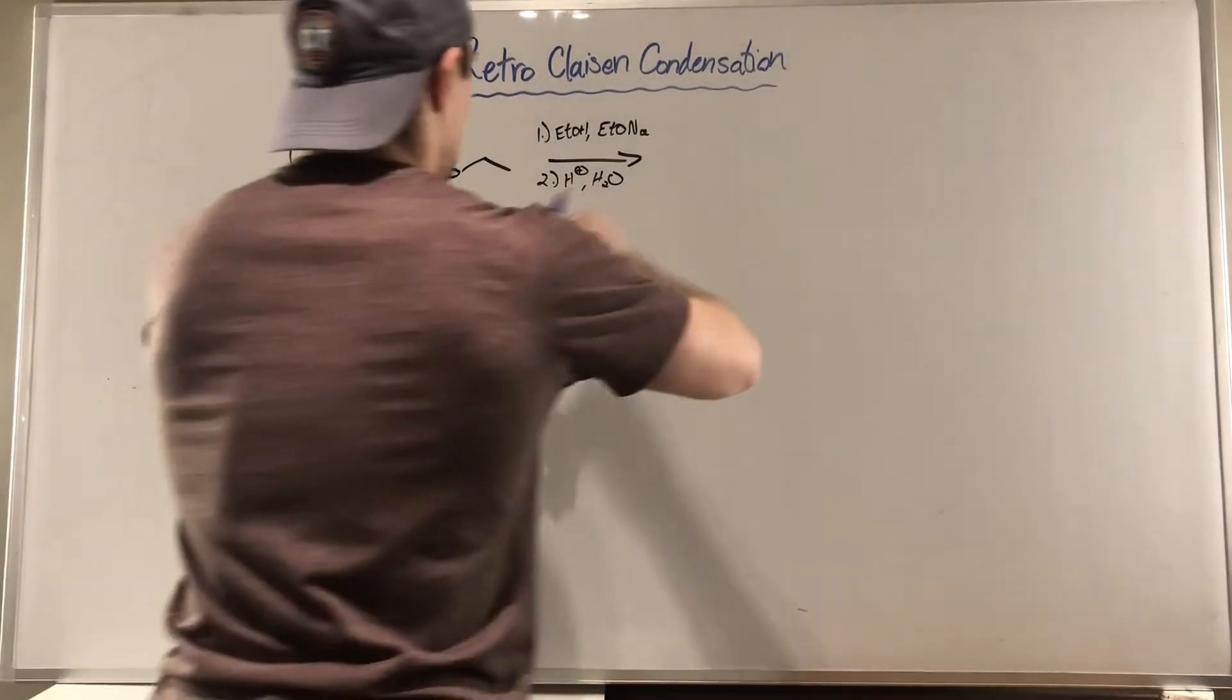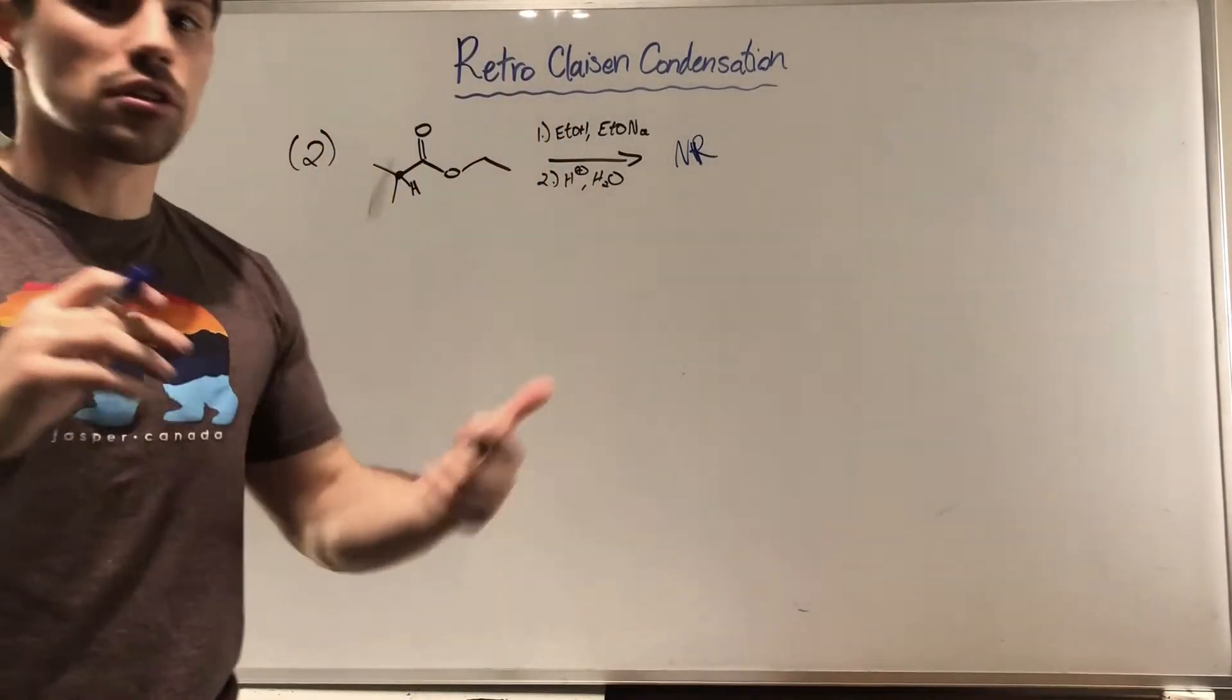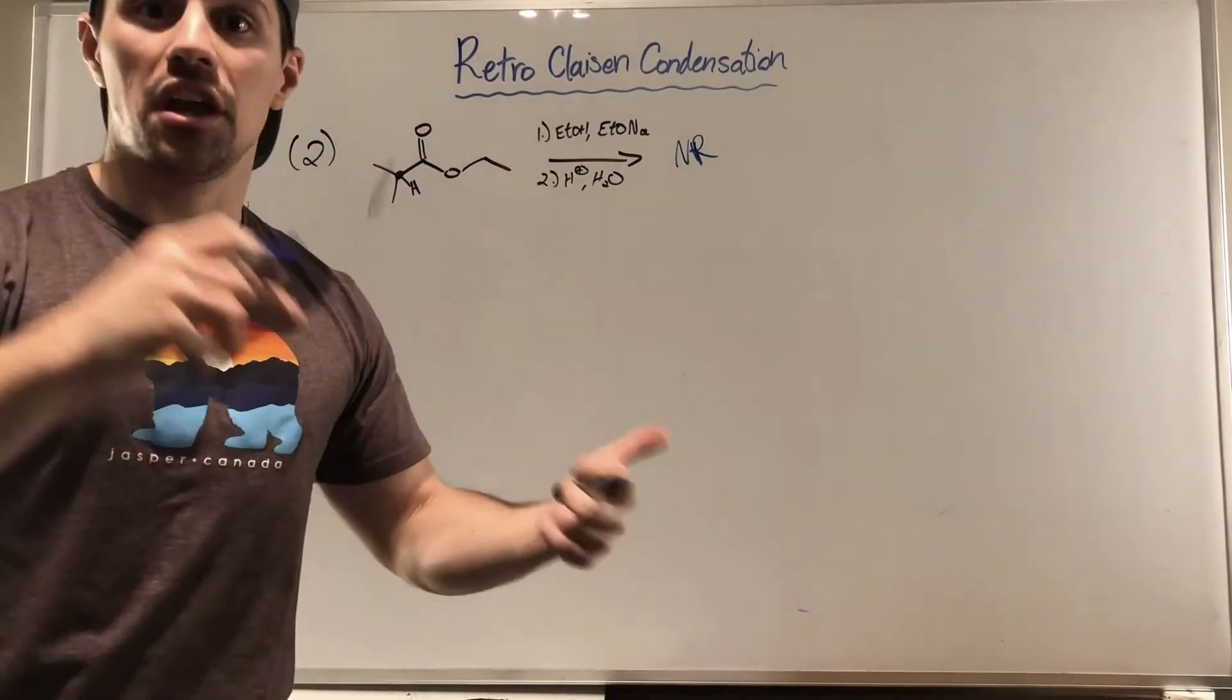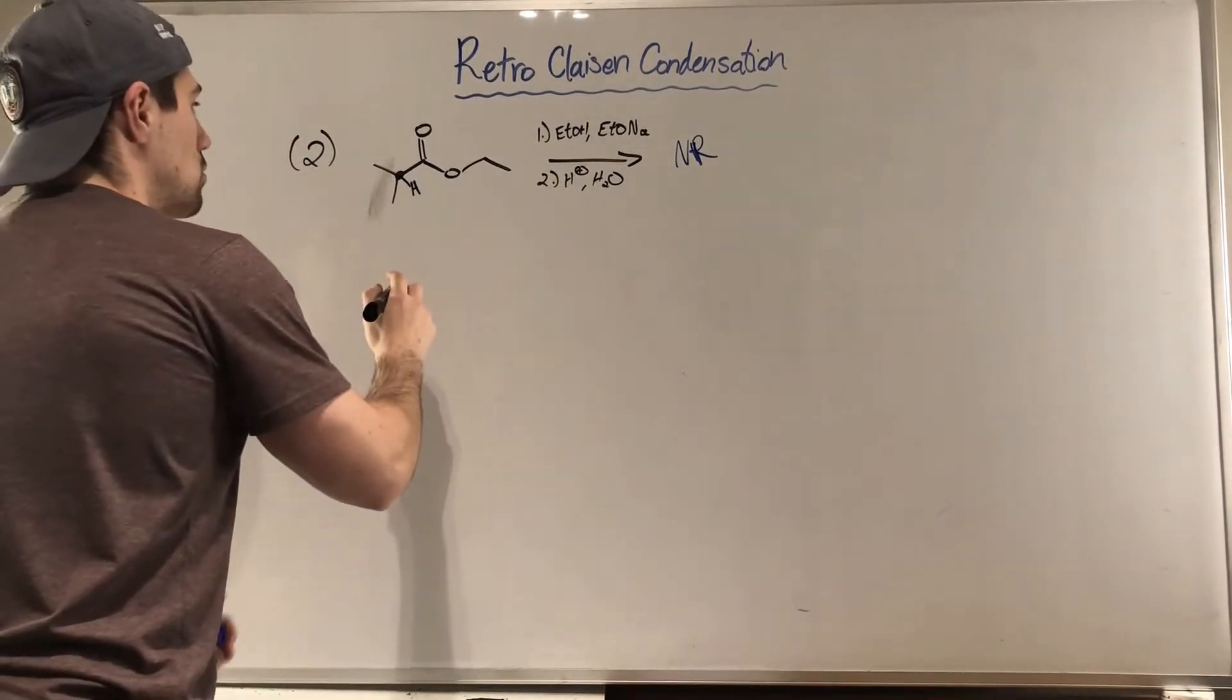So we know this is no reaction. And again, if you're a little shaky on the Claisen condensation I would recommend watching the video here on Jochem for it. But we will get to an intermediate that looks like this.